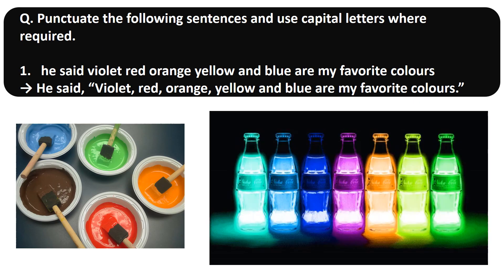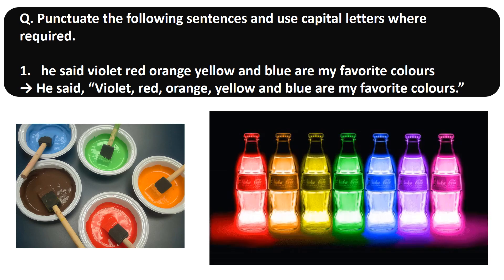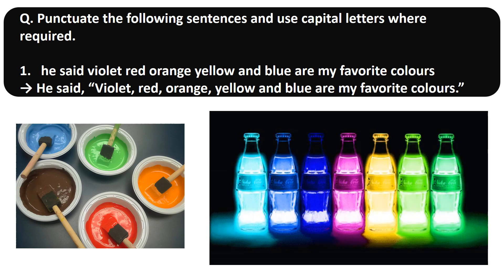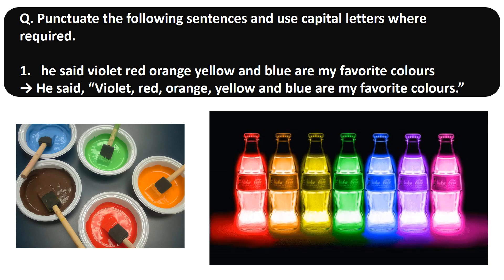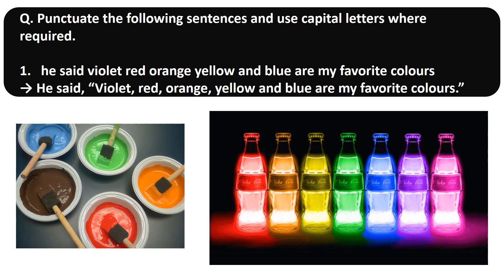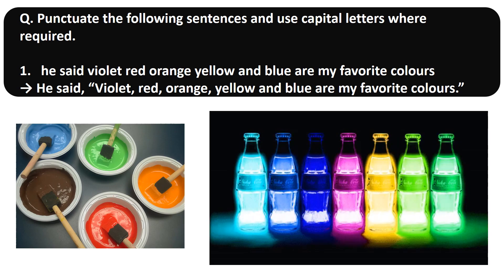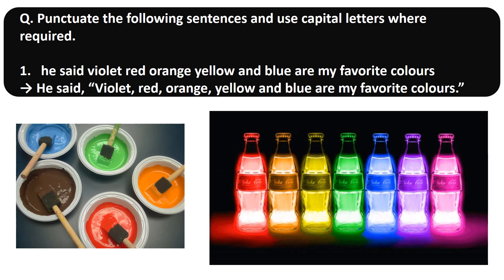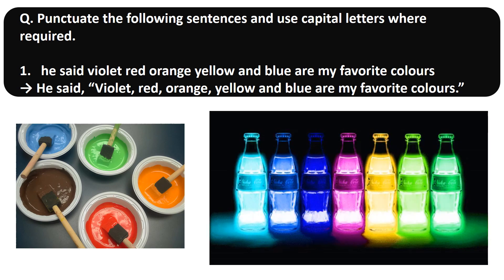Exercise: punctuate the following sentences and use capital letters where required. Sentence 1: 'He said, "Violet, red, orange, yellow and blue are my favourite colours."' The sentence begins with a capital letter. Quotation marks are used as the exact words of the speaker are noted. Commas are used to separate the words, and it ends with a full stop.